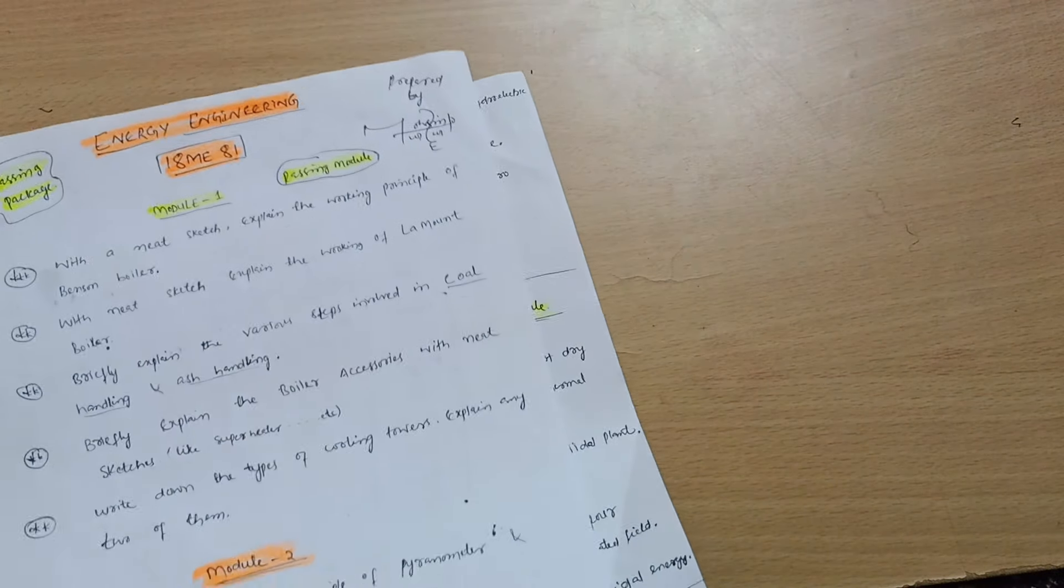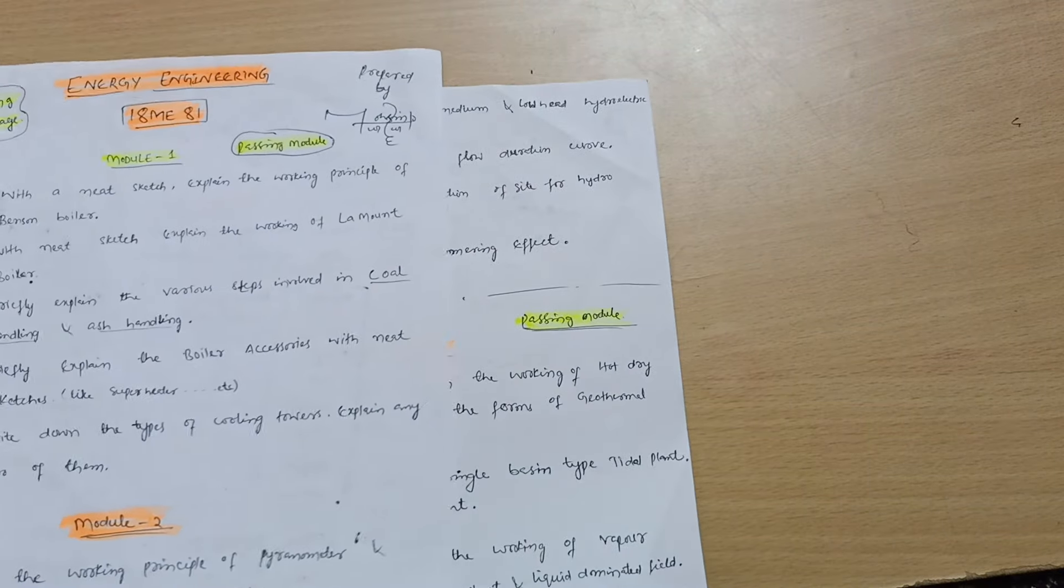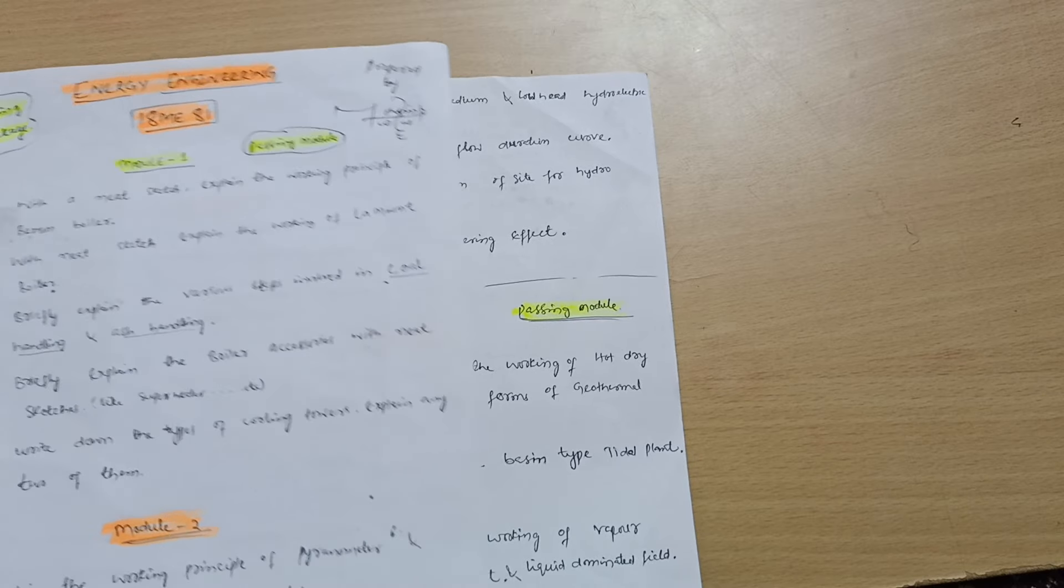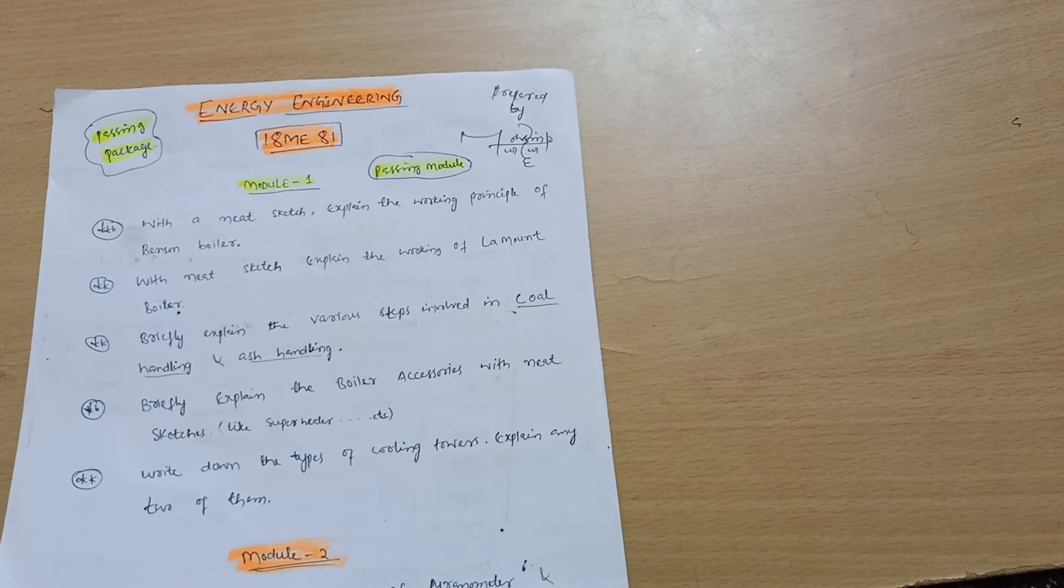This is all about the Module 5. These are the five modules which I discussed here. If you want to pass the subject, you have to go through these passing modules that I discussed. If you want to score, you can easily score in the 8th semester as two subjects are already over here, which is not typical to handle.